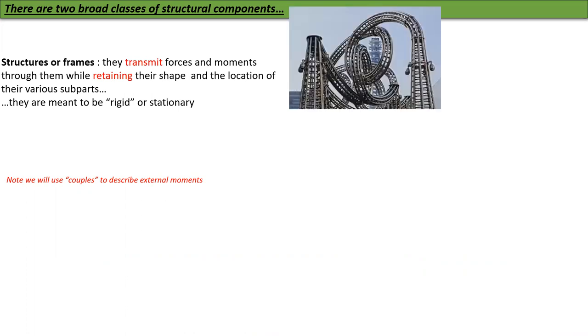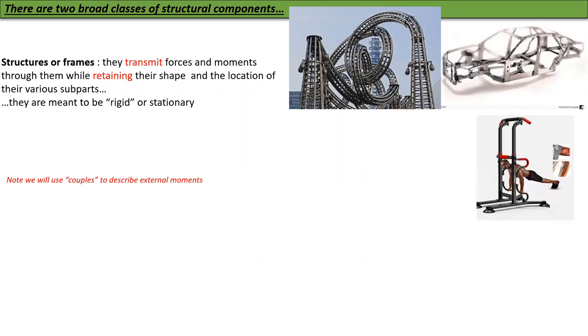In this particular example, the roller coaster is a giant frame which is itself meant to be rigid while it allows other objects to move through it in a prescribed way. A car body frame is similar in this regard, as is an exercise machine frame or a wheelchair frame.